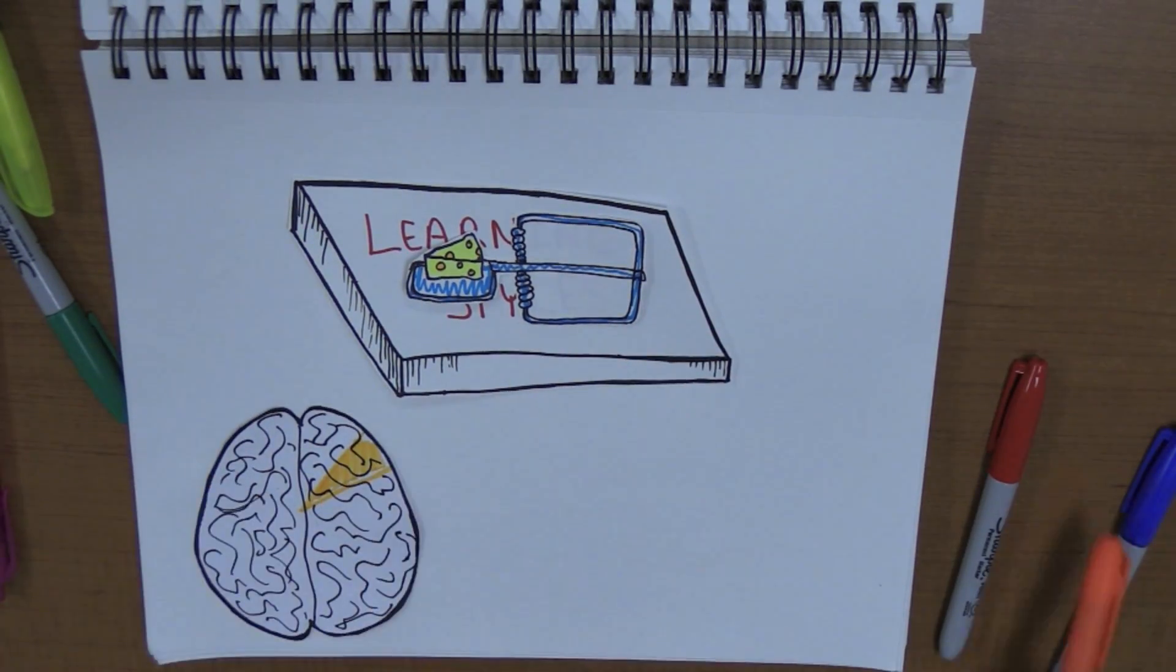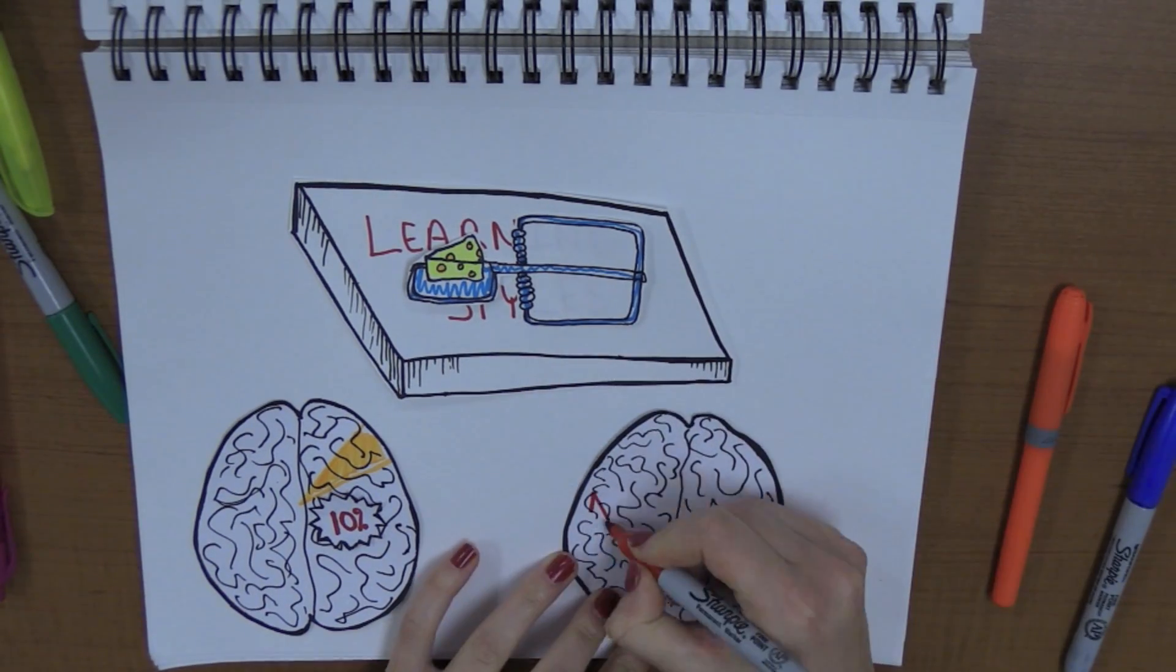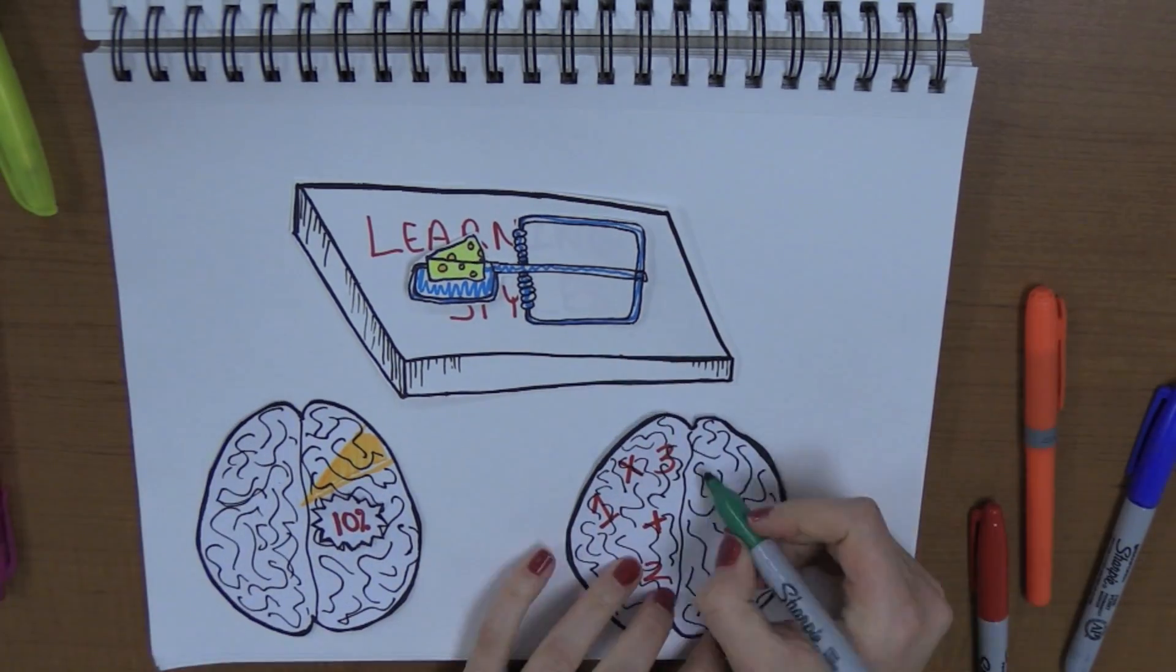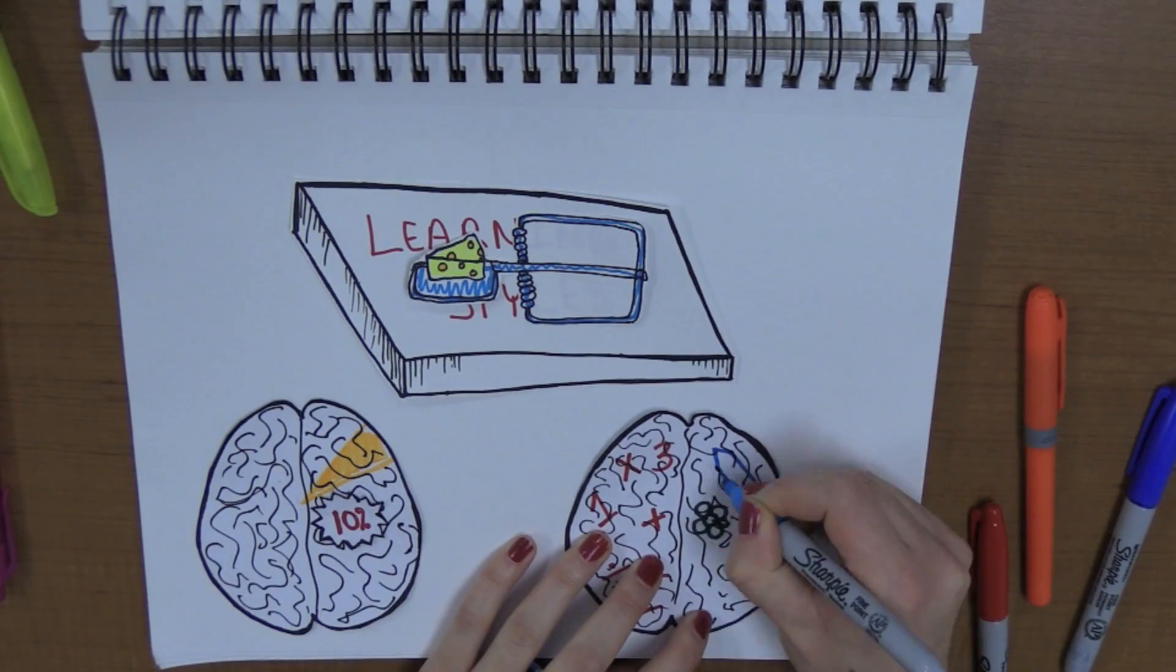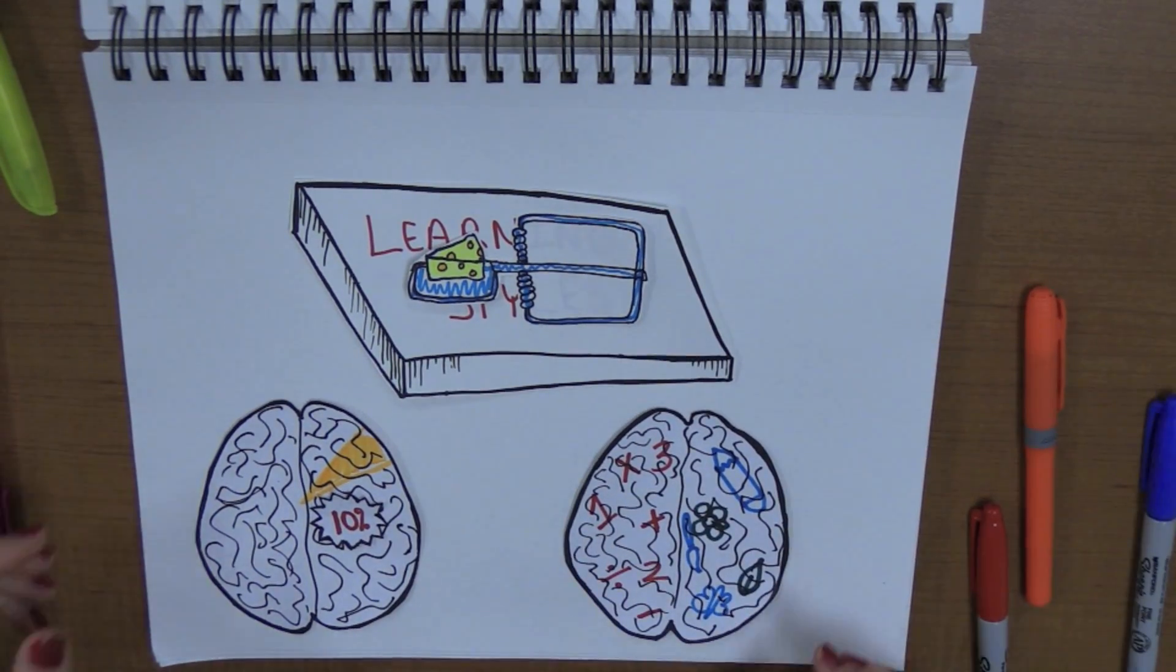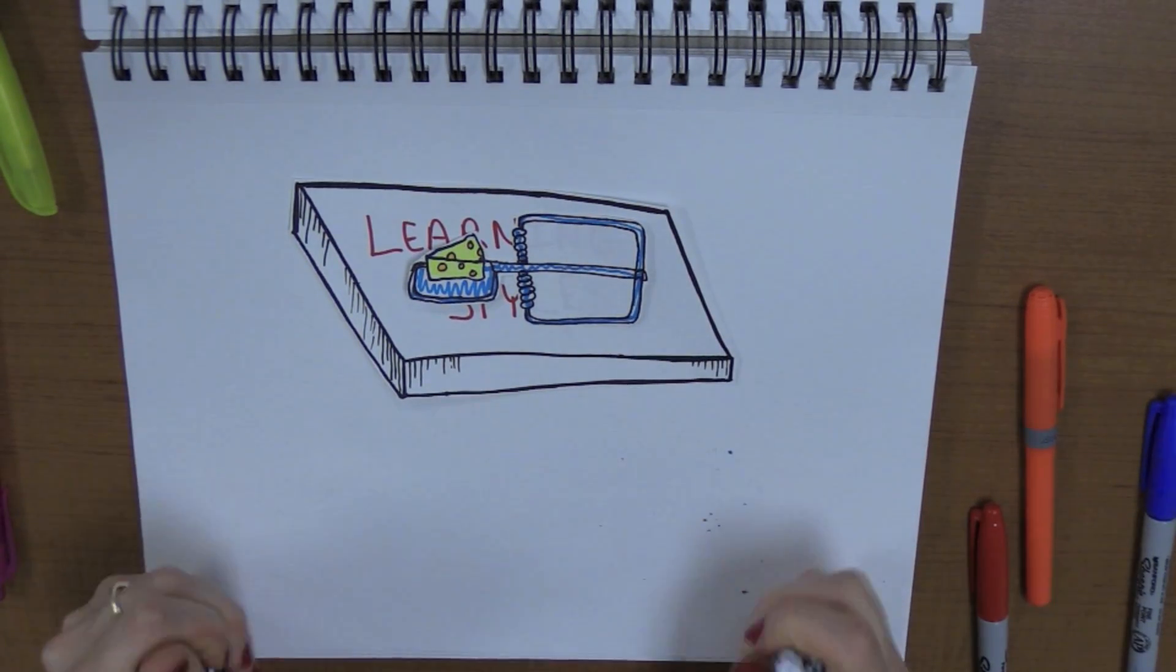This is just like the false claims that we only use 10% of our brains, or that certain people are left-brained or right-brained. We do not have learning styles, we use our entire brains, and there is no such thing as being either left-brained or right-brained.